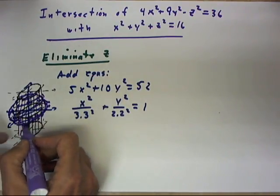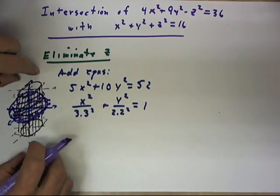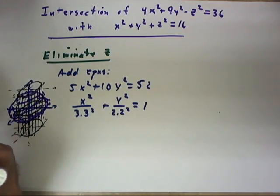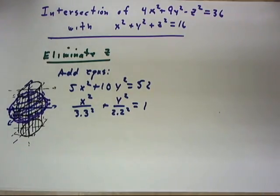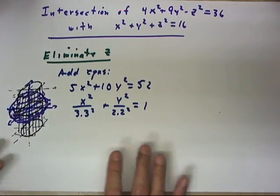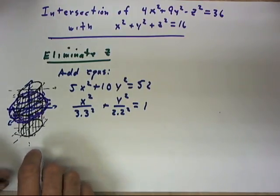And it's clear that that sphere does intersect this elliptical cylinder. It might be a little bit difficult to draw the locus of points. And this picture is already messy enough. So I'm not even going to attempt that.